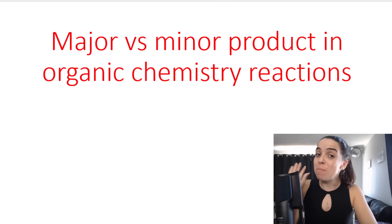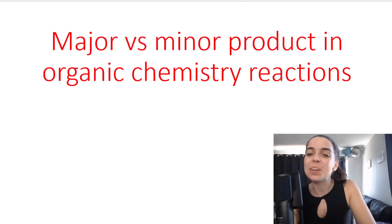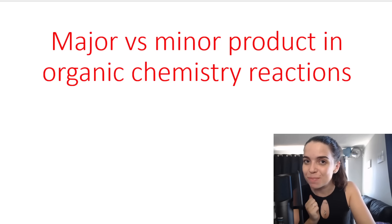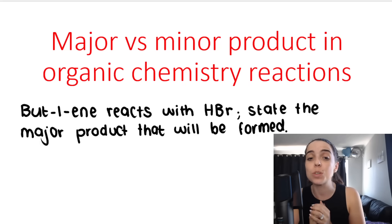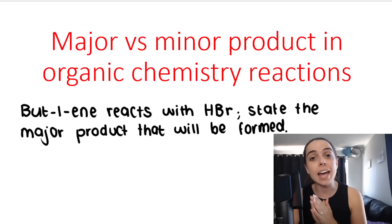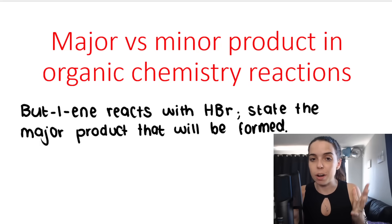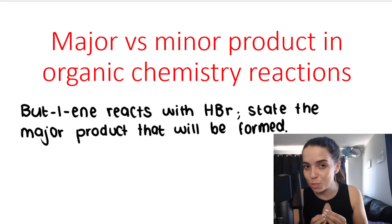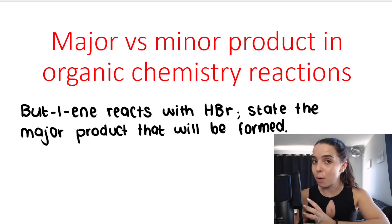In this lesson, we will speak about the major versus minor products in organic chemistry reactions. In chemistry, we can say, for example, but-1-ene reacts with hydrogen bromide. State the major product that will be formed. What you need to understand is that in several organic chemistry reactions, two types of products can potentially be formed — one that we call the major product and one that we call the minor product.